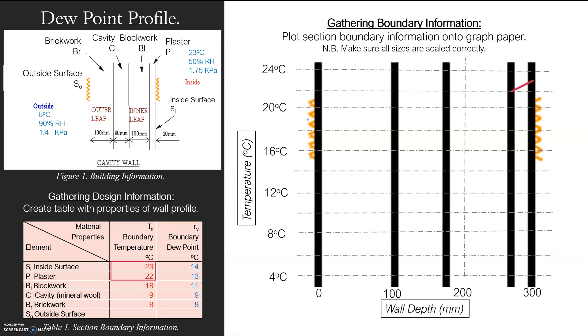First up, I'm looking at my inside surface to my plaster. This red line here shows me it's gone from 23 degrees to 22, and then I just keep plotting, all the way down to 18, 9, 8. There you go, there is my boundary temperature. So every single boundary, that's my temperature profile. We call this temperature profile.